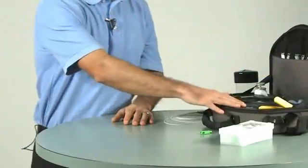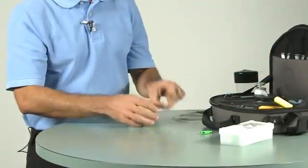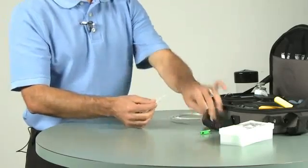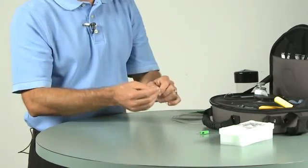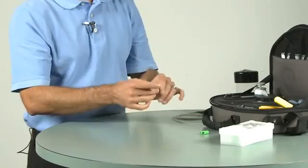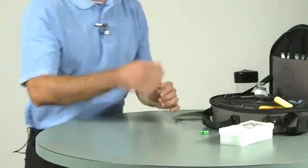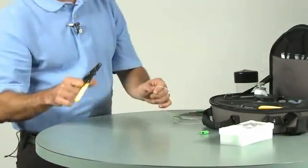At this point your installation tool is ready to go and you'll begin with your fiber preparation. The first thing that goes on the fiber is the boot. Once that's in place you begin your stripping process.